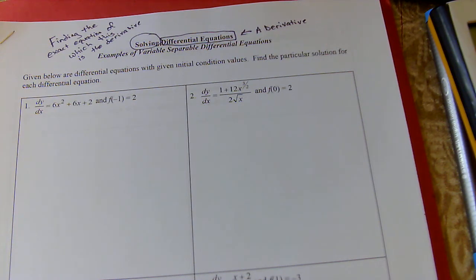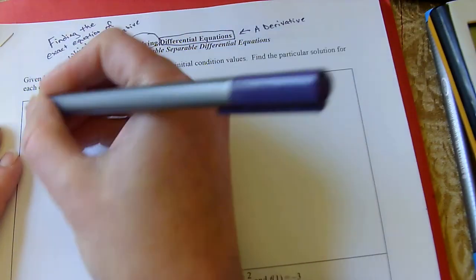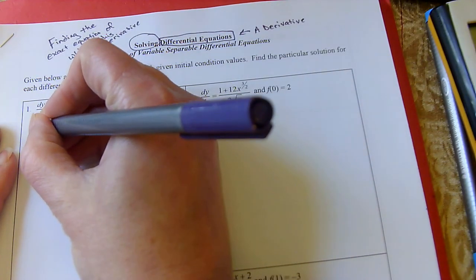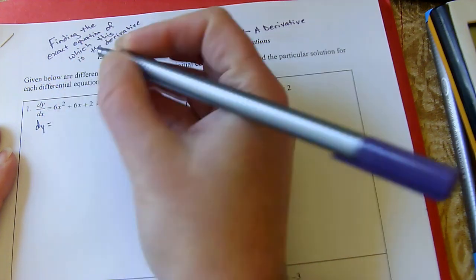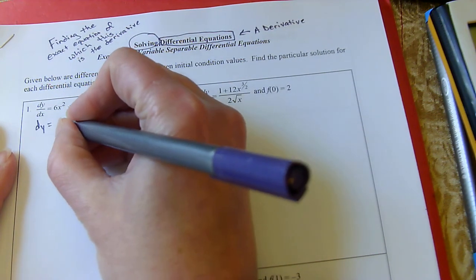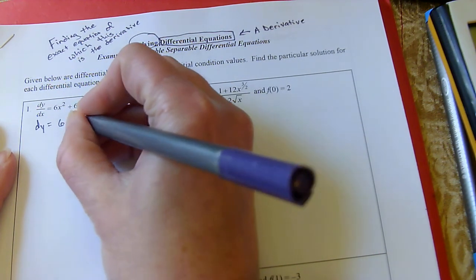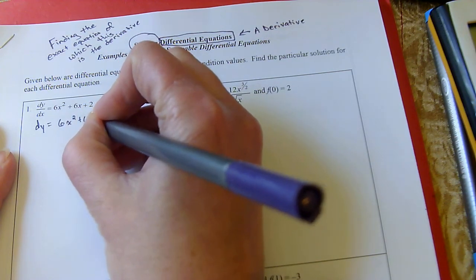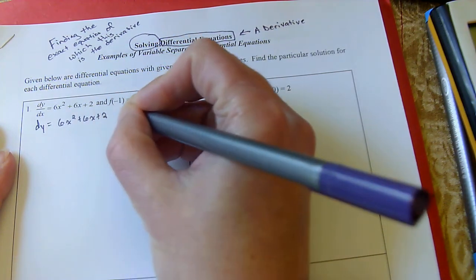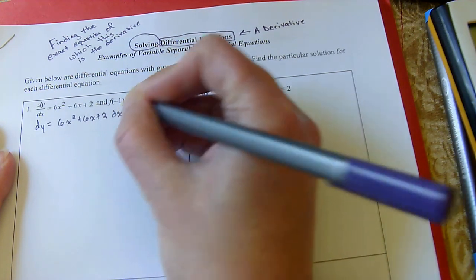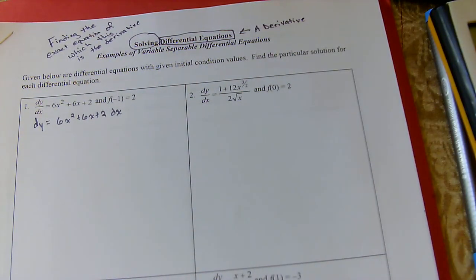Instead of being given f prime, we're given dy/dx. So I'm going to rearrange this a little bit. I'm going to multiply dx onto the other side. So I've got dy equals 6x squared plus 6x plus 2 with a dx. The idea here is we're going to have the y's on one side and the x's on the other.